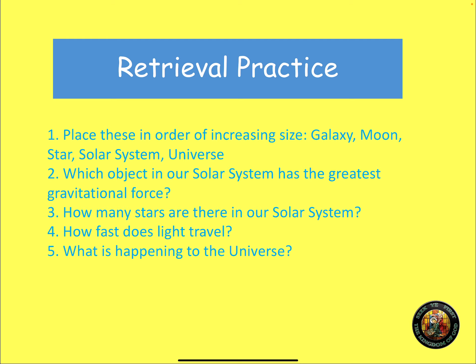Okay, so let's have a look. Place these in order of increasing size: galaxy, moon, star, solar system, universe. Increase in size, so that would be moon, star, solar system, galaxy and universe.